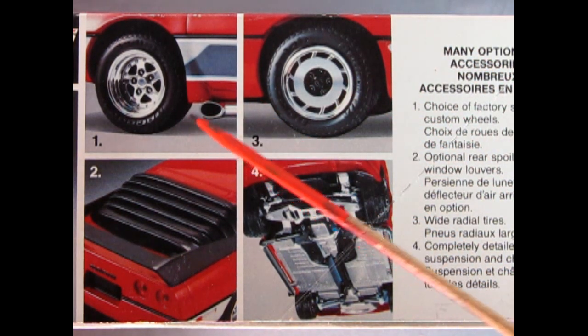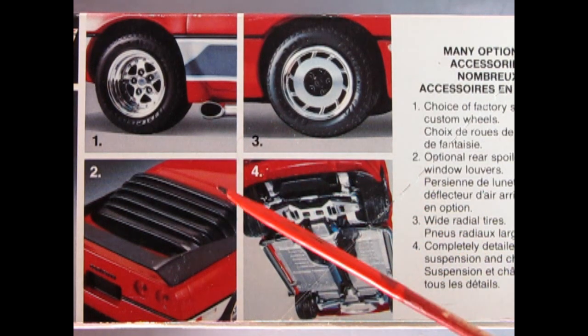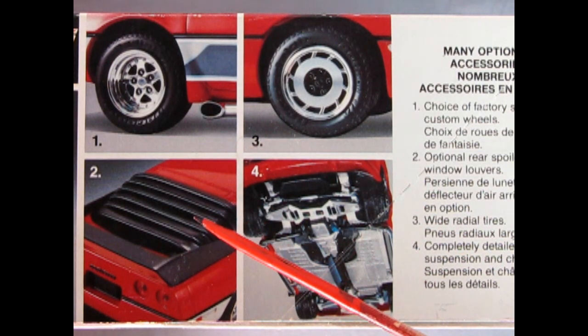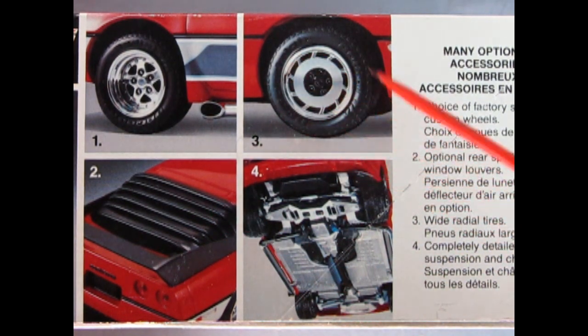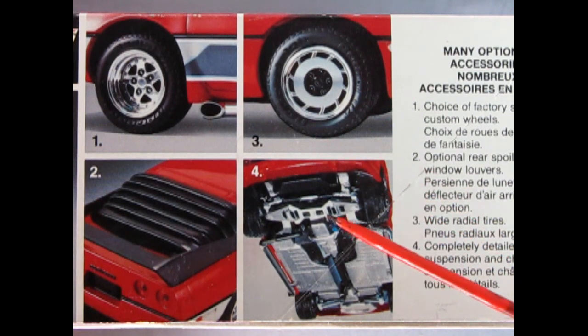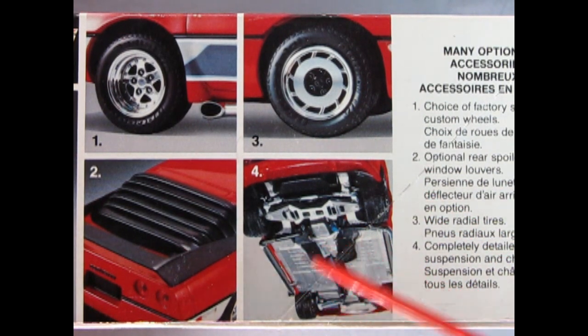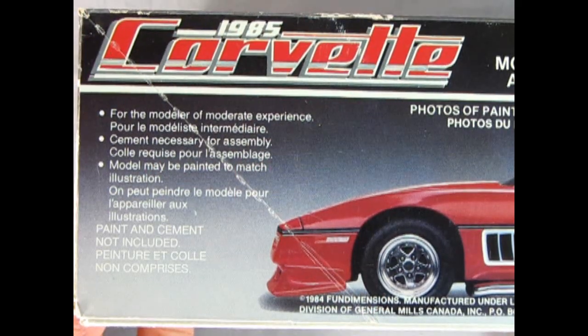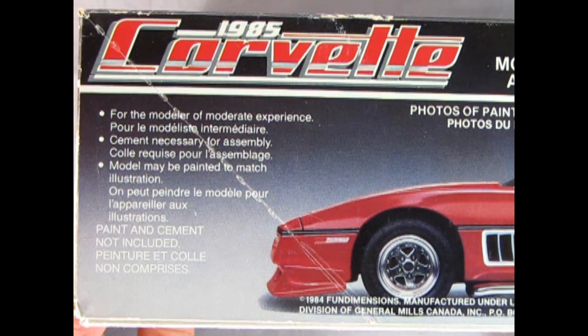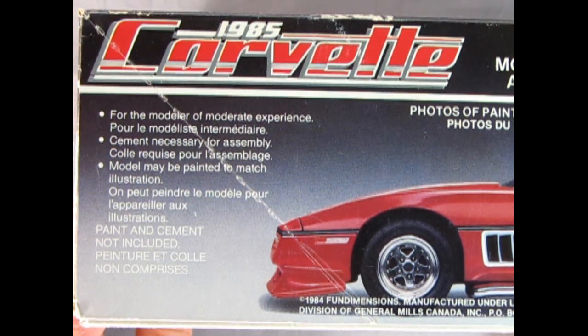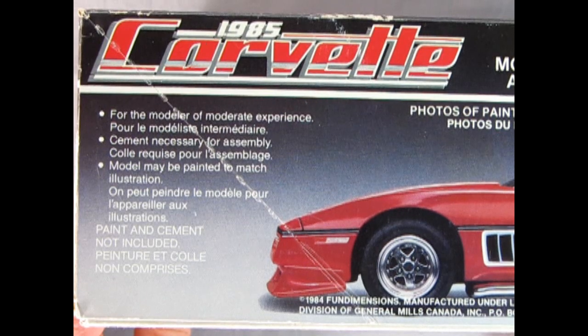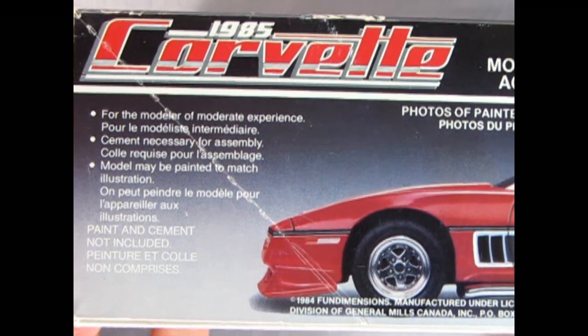These are the many optional accessories you get in your kit: a choice of factory stock wheels or custom wheels, optional rear spoiler and window louvers, wide radial tires, and a completely detailed suspension and chassis. This model kit was for the modeler of modern experience. Cement is necessary for assembly. Paint and cement not included.